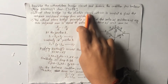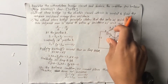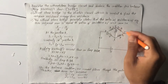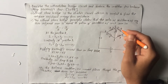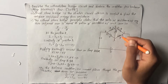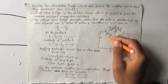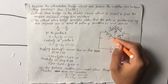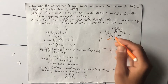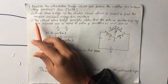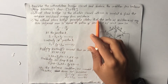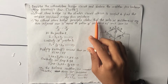Wheatstone Bridge is the electric circuit which is used to find the unknown resistance among four resistances — two known resistances, one variable resistance, and one unknown resistance X. The Wheatstone Bridge principle states that this principle states...